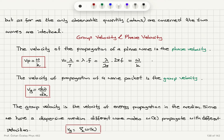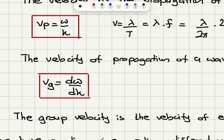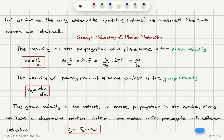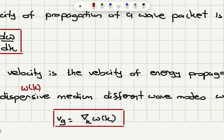The velocity of propagation of a wave packet, when you have more components in the wave, is called the group velocity. This is the generalized version of phase velocity — it is the derivative of ω with respect to k. The derivative of ω with respect to k would be identical to ω/k for a single plane wave, but if you have a wave packet, that will not be the case. The group velocity is the velocity of energy propagation in the medium for a wave packet. Since we have a dispersive medium — a relationship between ω and k that is not linear — different wave modes will propagate with different velocities. The group velocity is then the gradient of ω with respect to k.